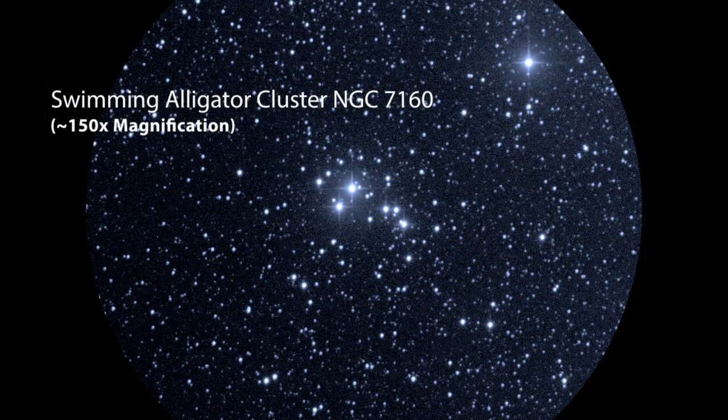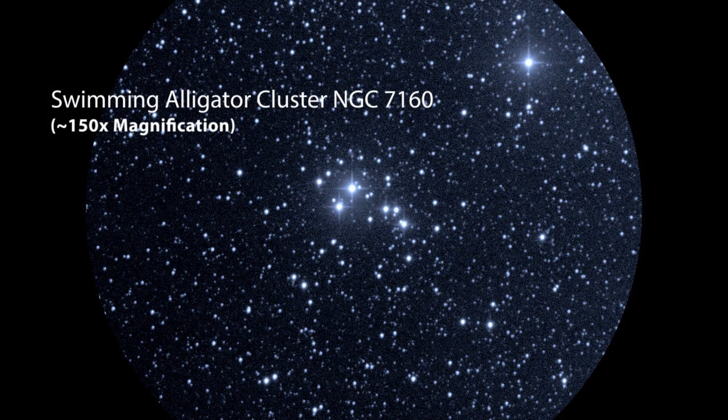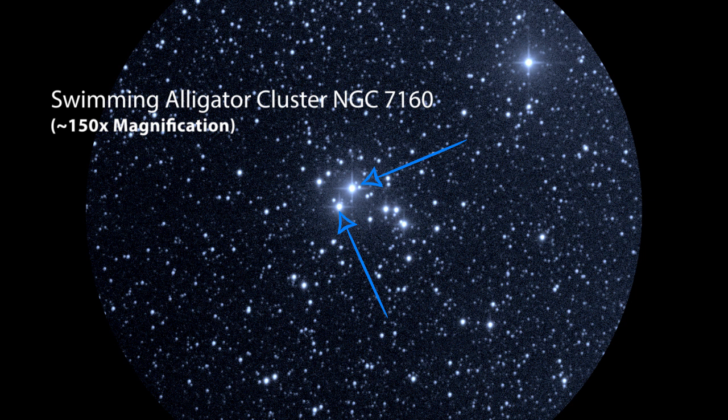This is the swimming alligator, or NGC 7160. Now, I'm not sure what it is that makes people like this one so much. I mean, basically, it's two bright stars with a little tail of stars trailing off behind it. But for whatever reason, it makes people smile.